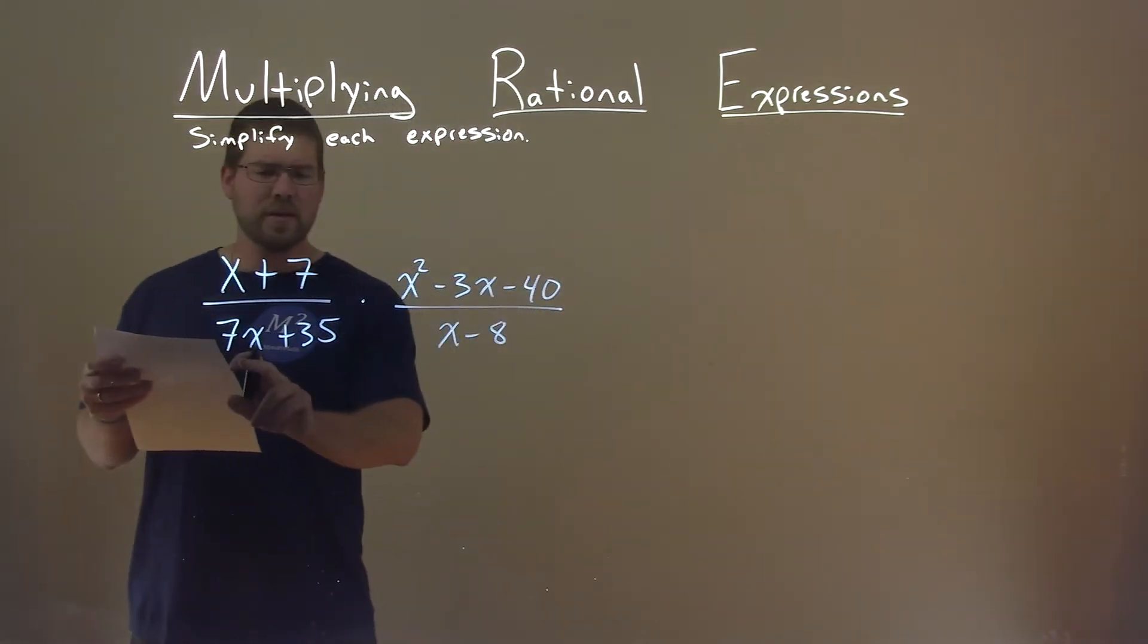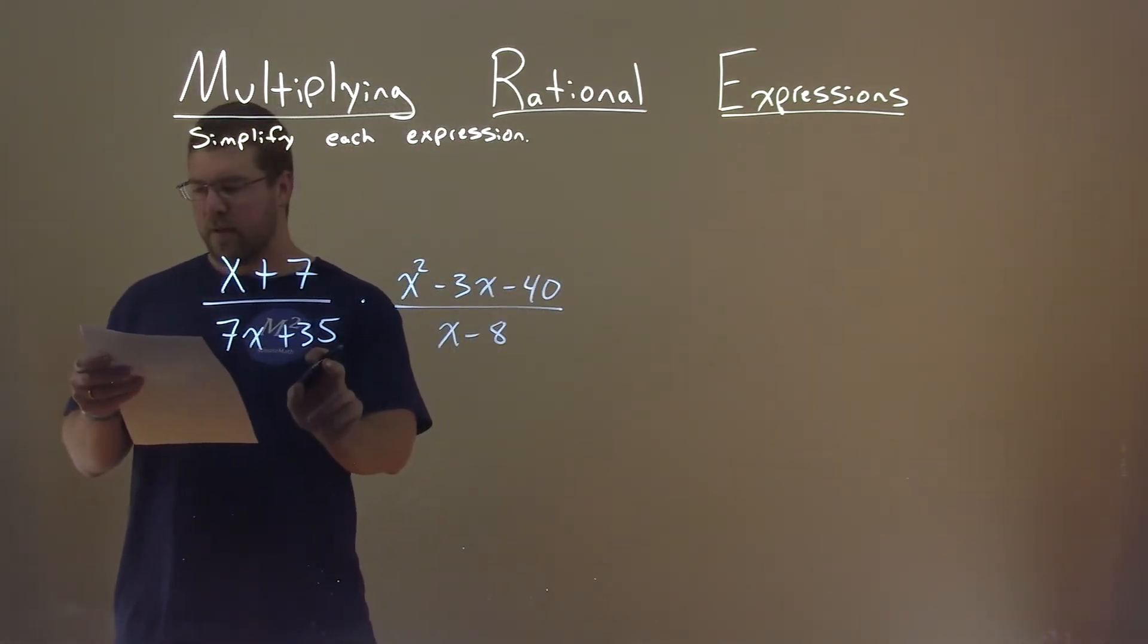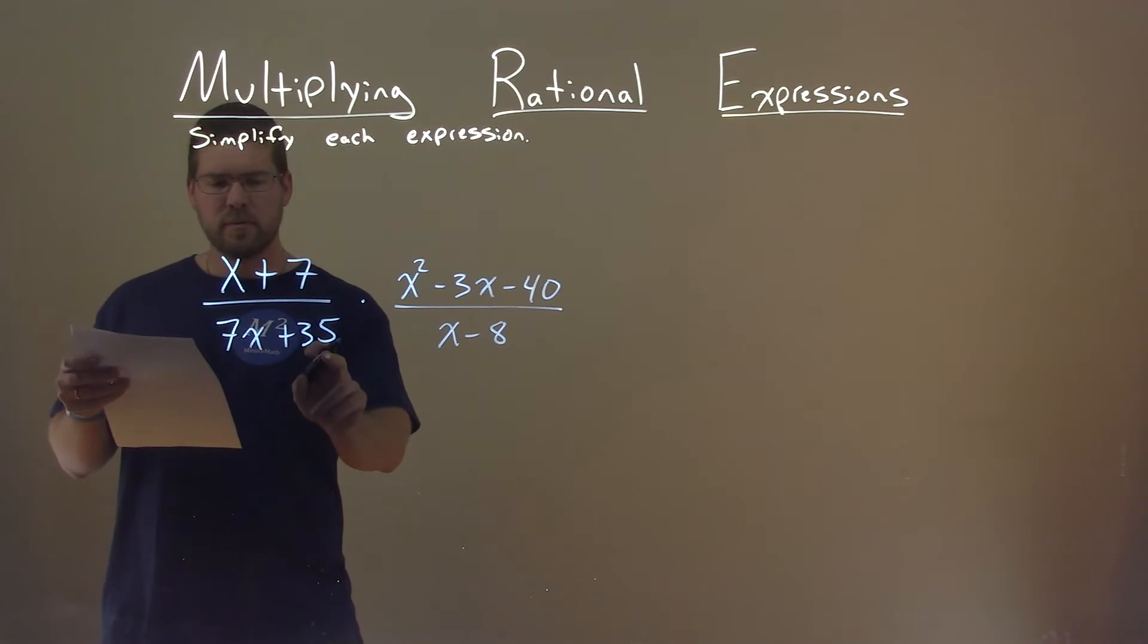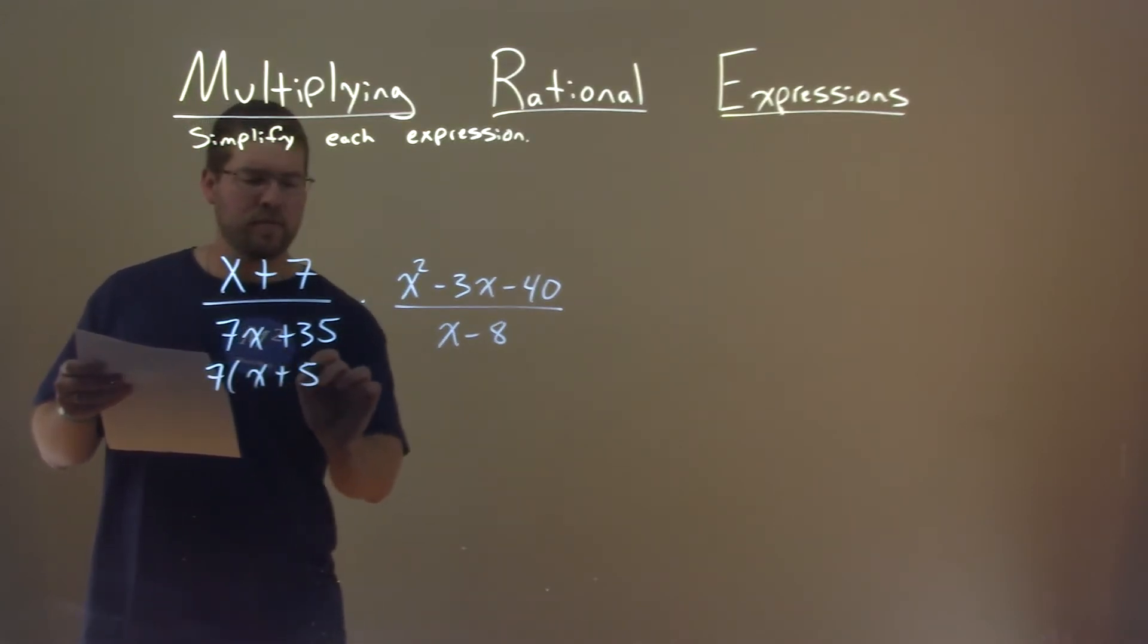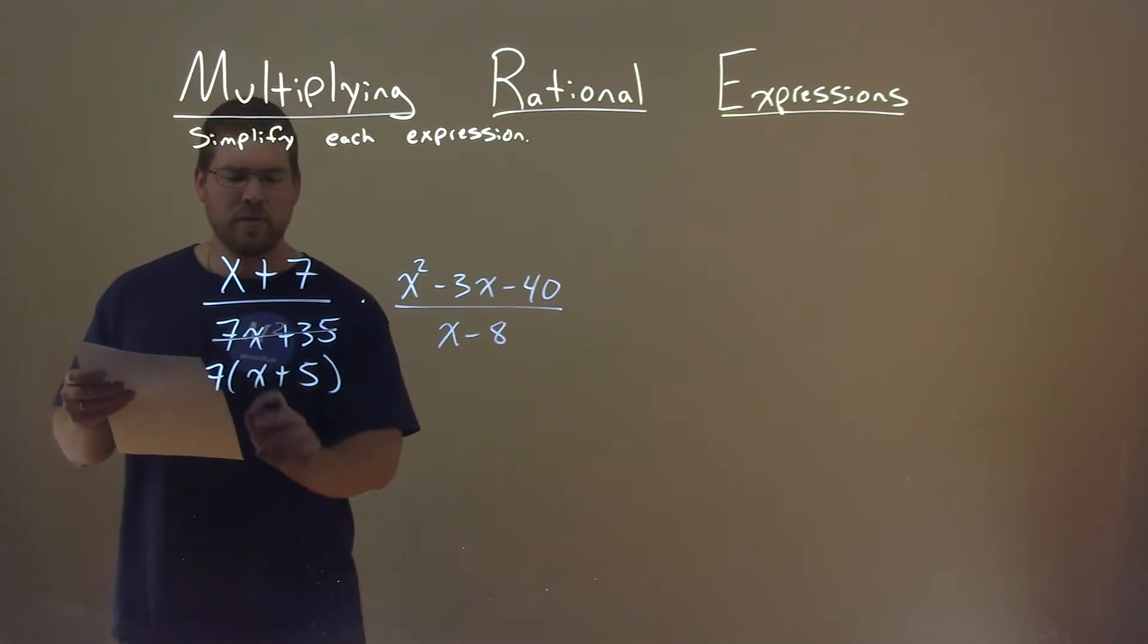Well, first let's see if we can factor some of these things out. 7x and 35, or plus 35, if I pull out a 7, I have an x plus 5 left over. So I'm going to rewrite that as that.